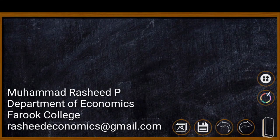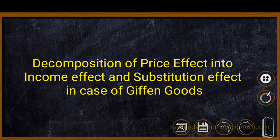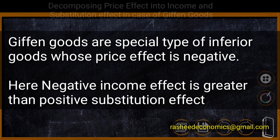Hello students. In the last class we explained the decomposition of price effect into income effect and substitution effect in case of inferior goods. Now we are going to explain the same process — decomposition of price effect into income effect and substitution effect — in case of a Giffen good.